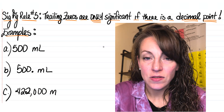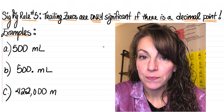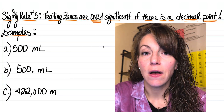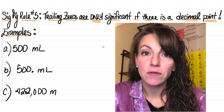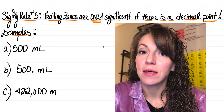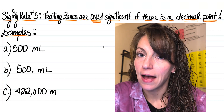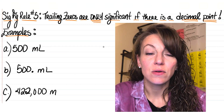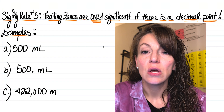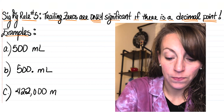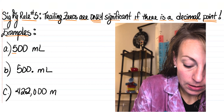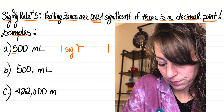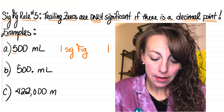Let's get started. Letter A gives us the measurement of 500 milliliters. In this particular measurement, we have five — a nonzero digit — followed by two zeros. These zeros are trailing zeros because they come after that number five. There's no decimal point present, so we're going to ignore those two trailing zeros and only count the nonzero digit towards our total number of sig figs. In this particular measurement, we only have one sig fig.